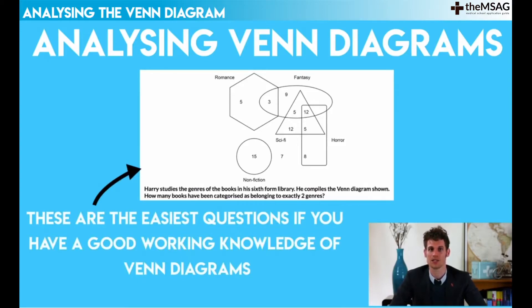Analyzing the Venn diagram. These are the easiest questions if you have good working knowledge of Venn diagrams. Therefore they should only really take you between 20 to 40 seconds.